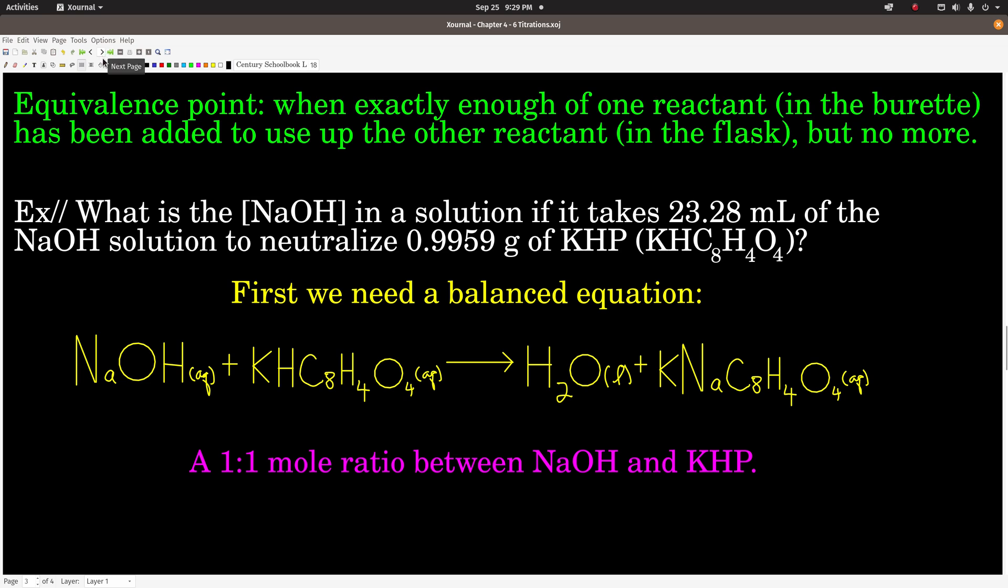So that means that at the equivalence point, we'll have added the same number of moles of sodium hydroxide from the burette as there were moles of KHP down in the solution. Now, see that our goal is to find the molarity or concentration of sodium hydroxide. We already know the volume, so that means if we can get the moles, we can calculate the molarity quite easily by using the definition of molarity. We already know the moles of KHP because we know the mass, and we can get the molar mass. So grams over the molar mass gives us the moles.